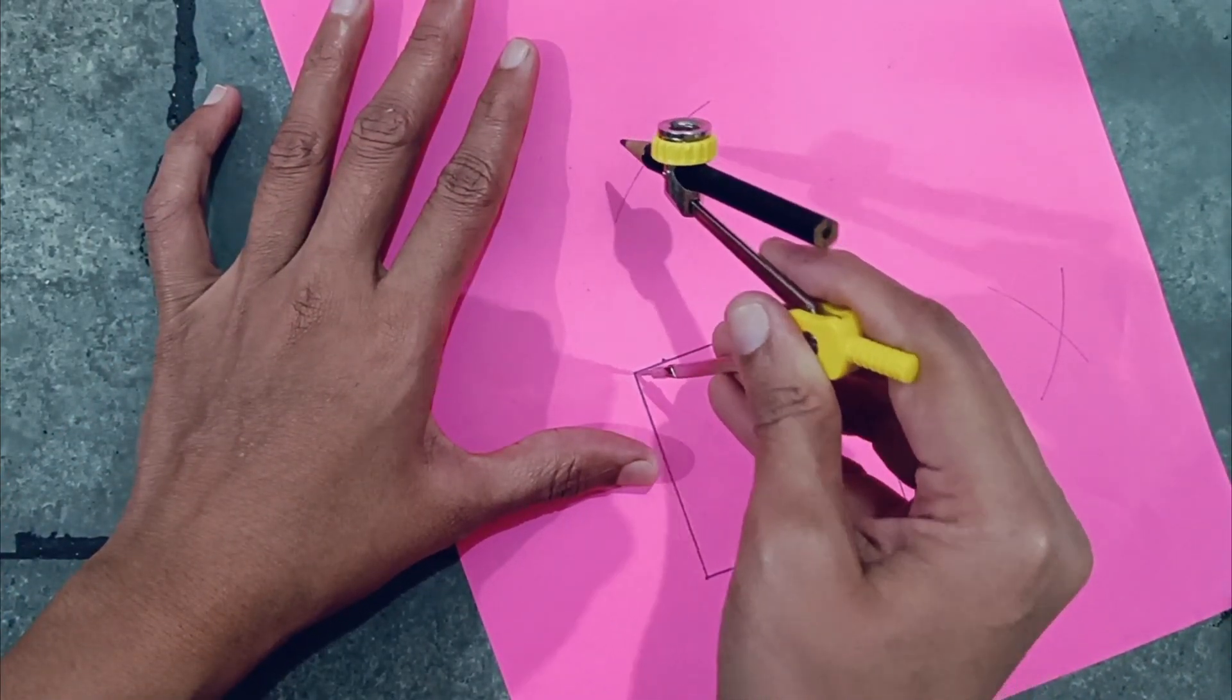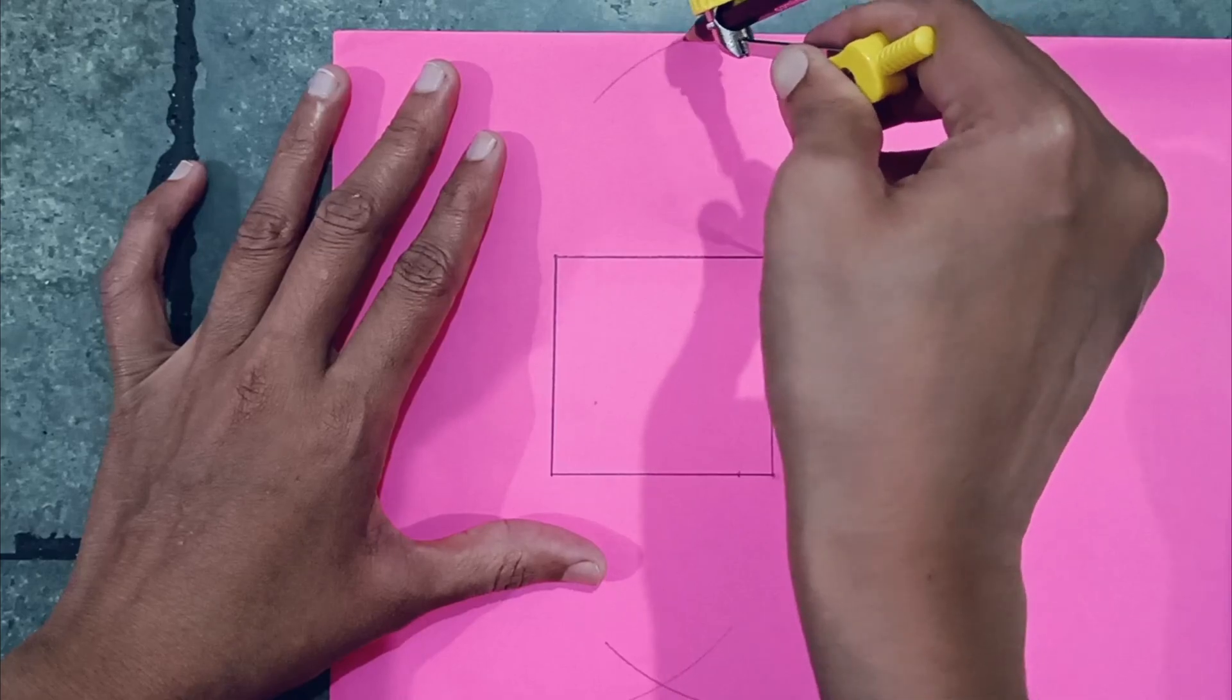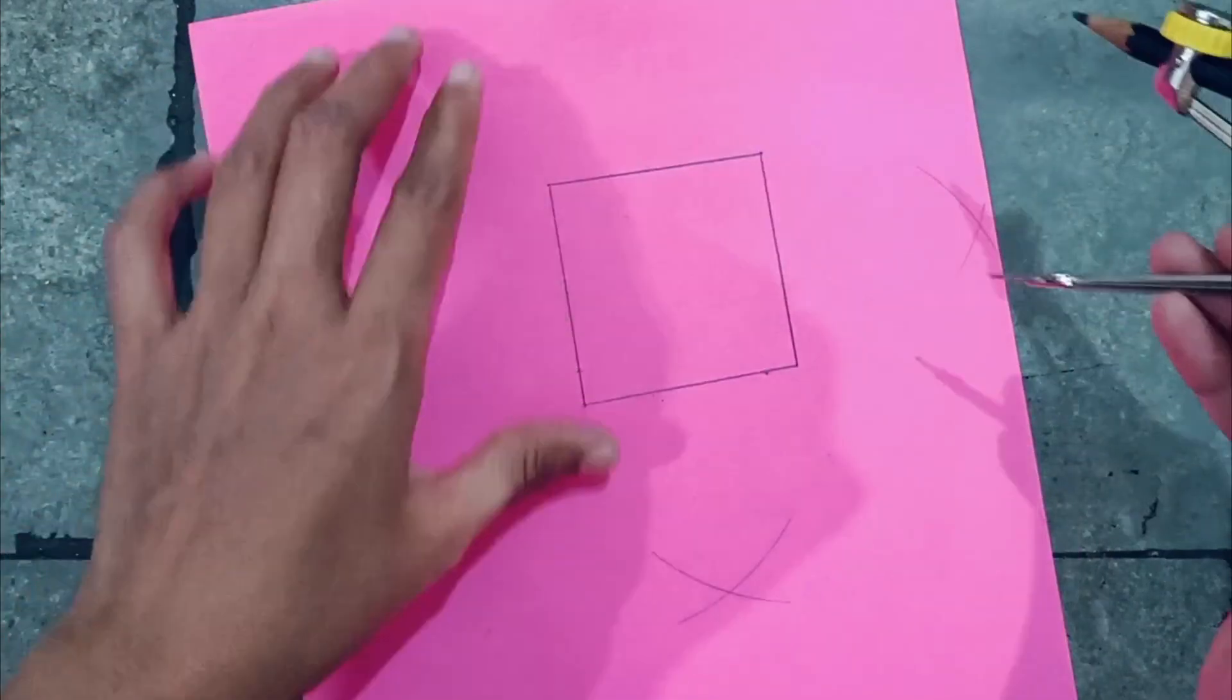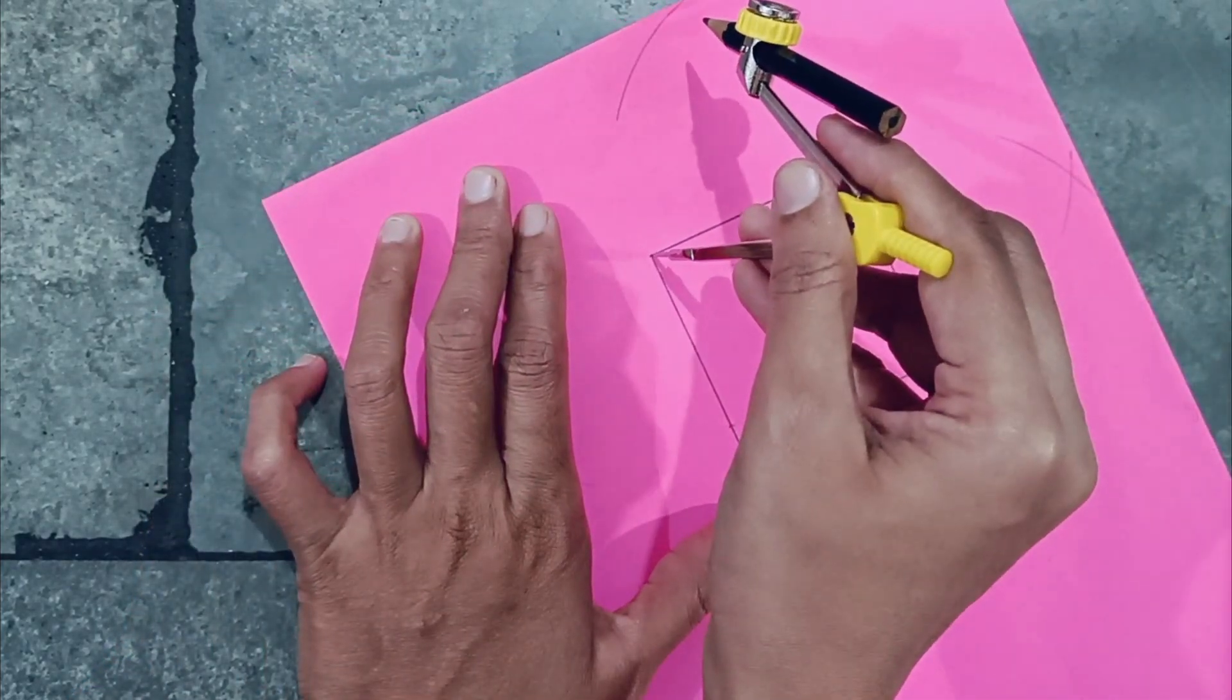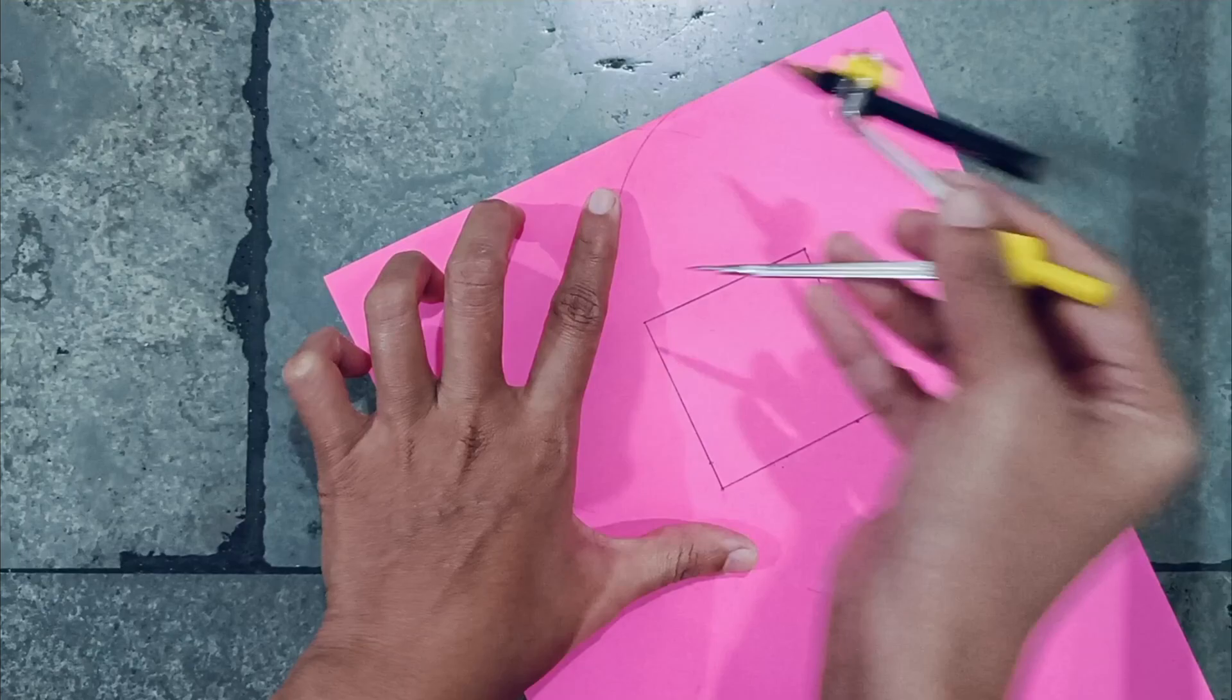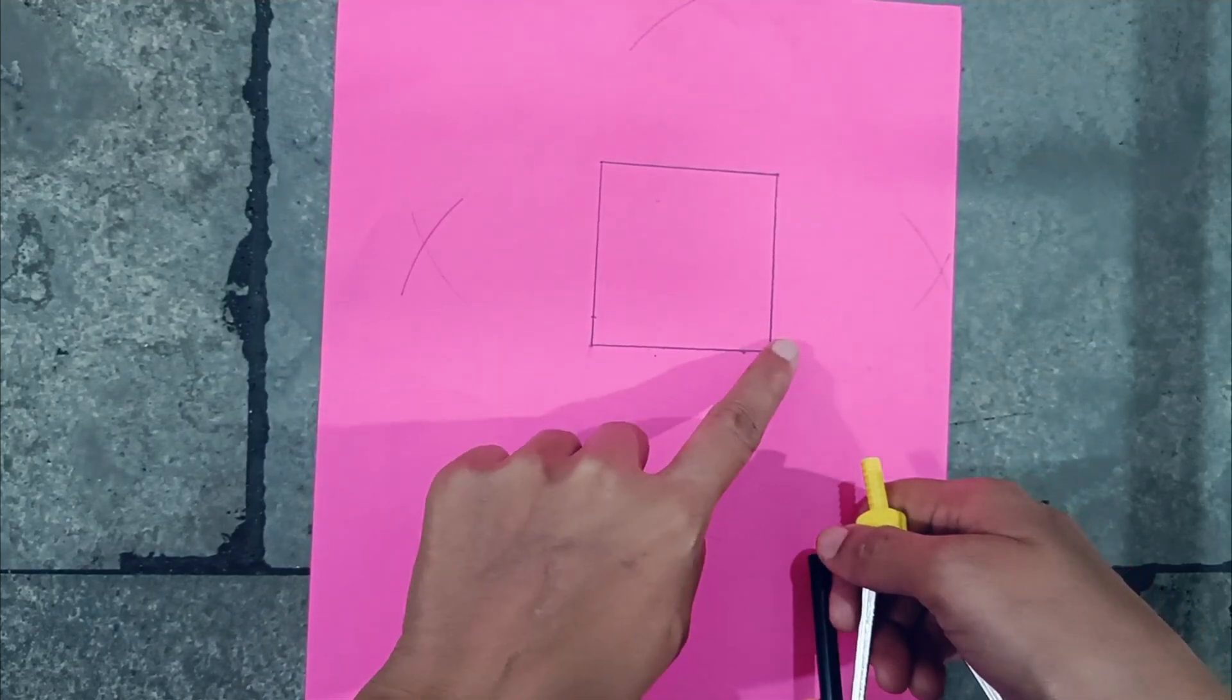From each side, you have to take a central point like this. Now you have to join like this, this point, like this.